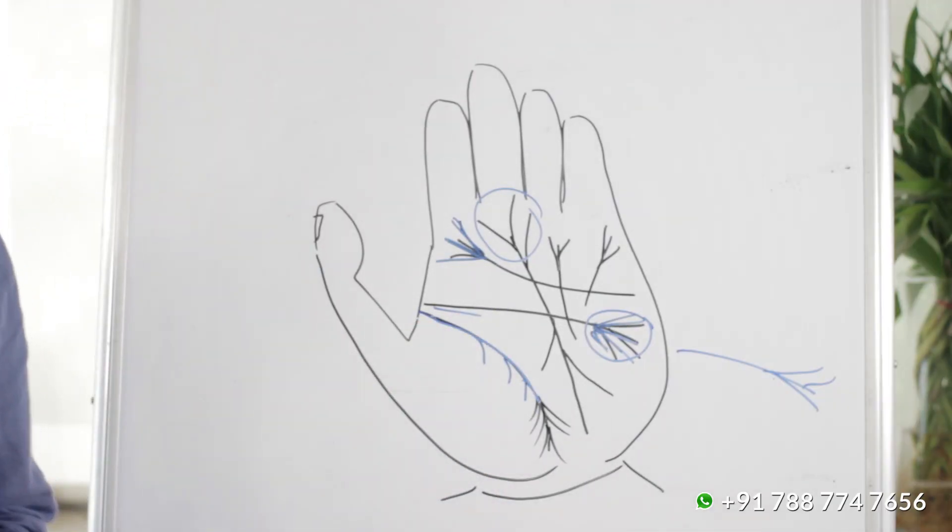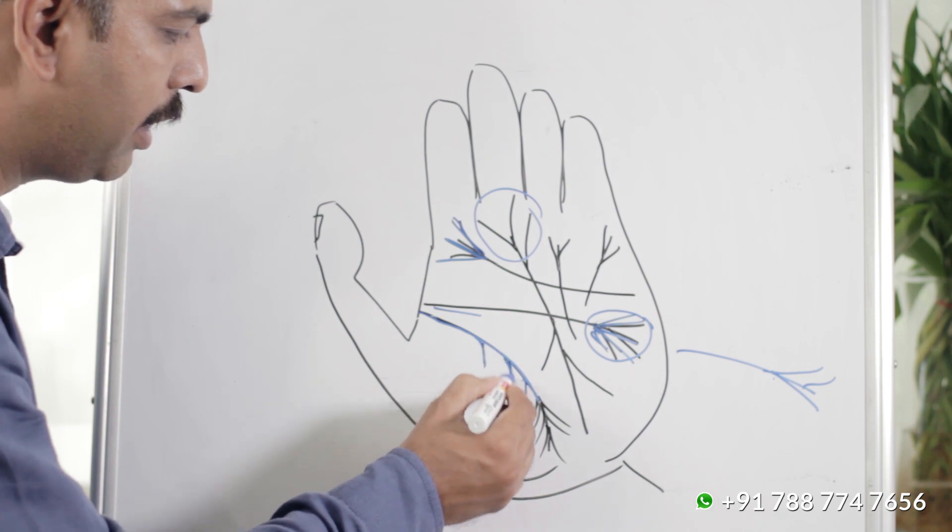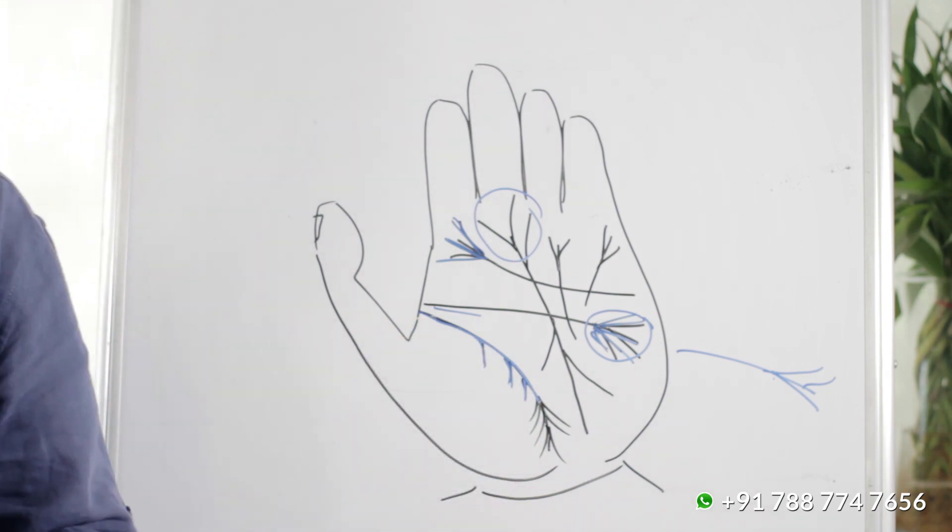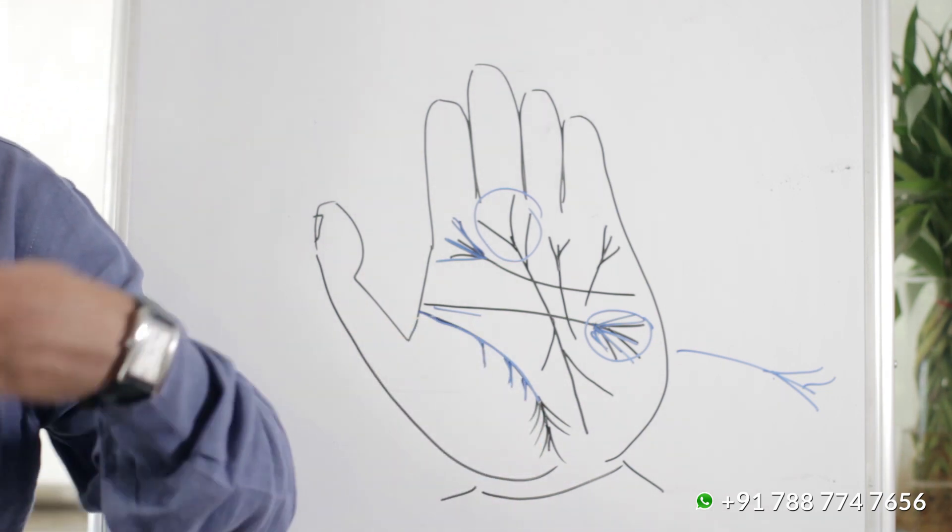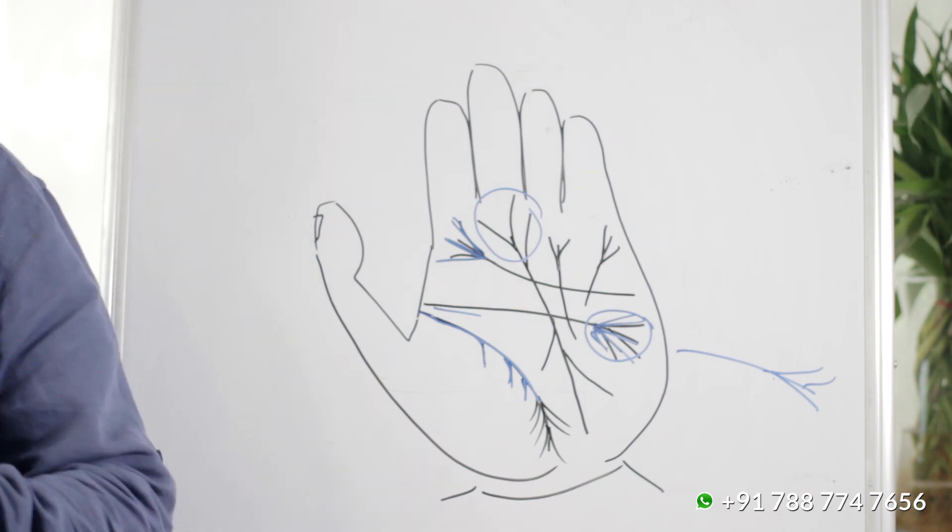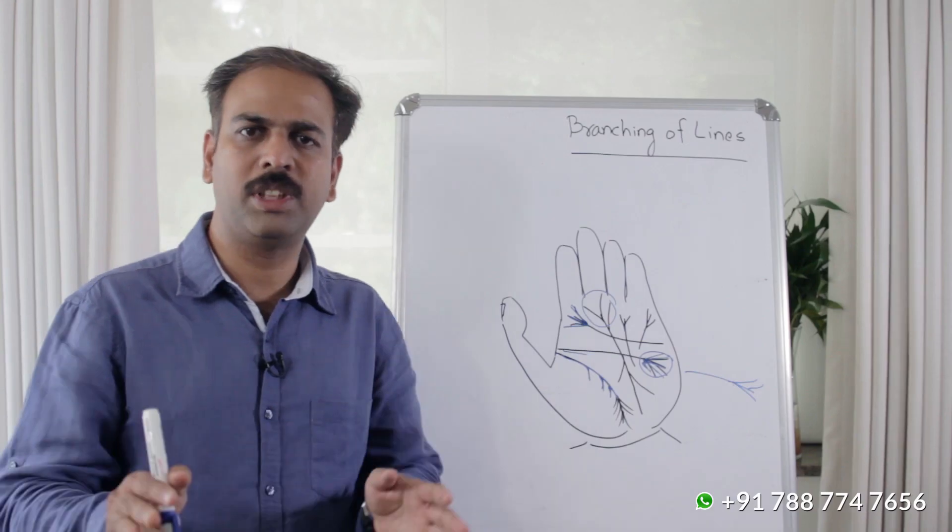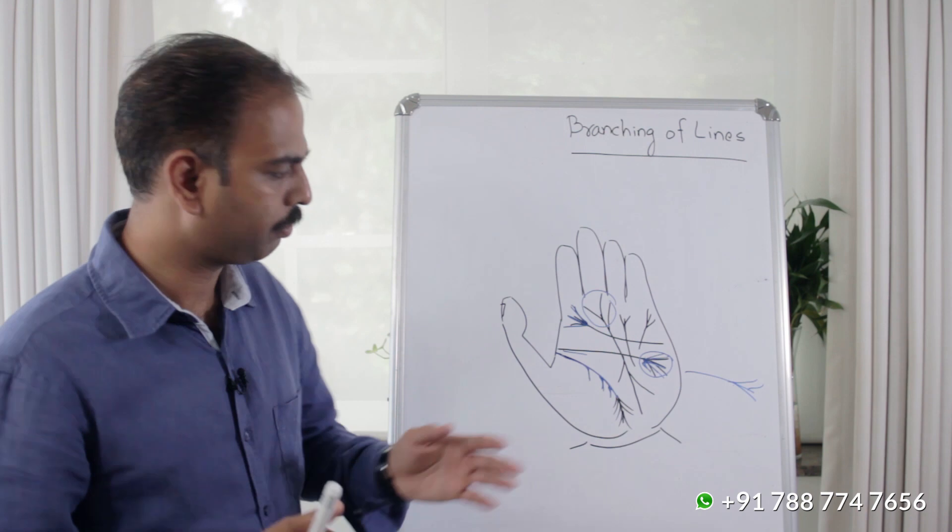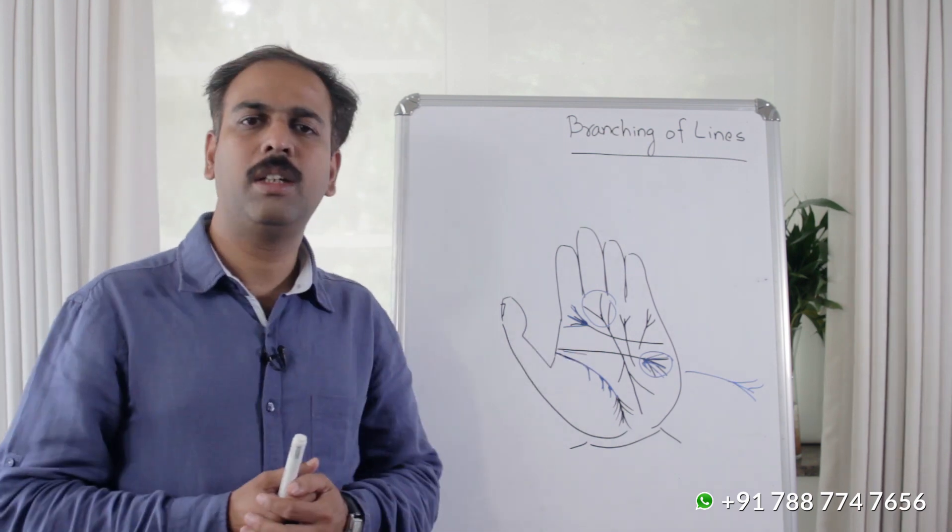with lines going from the inside - this is a branching which is positive for the life line. Then we will see the fate line.